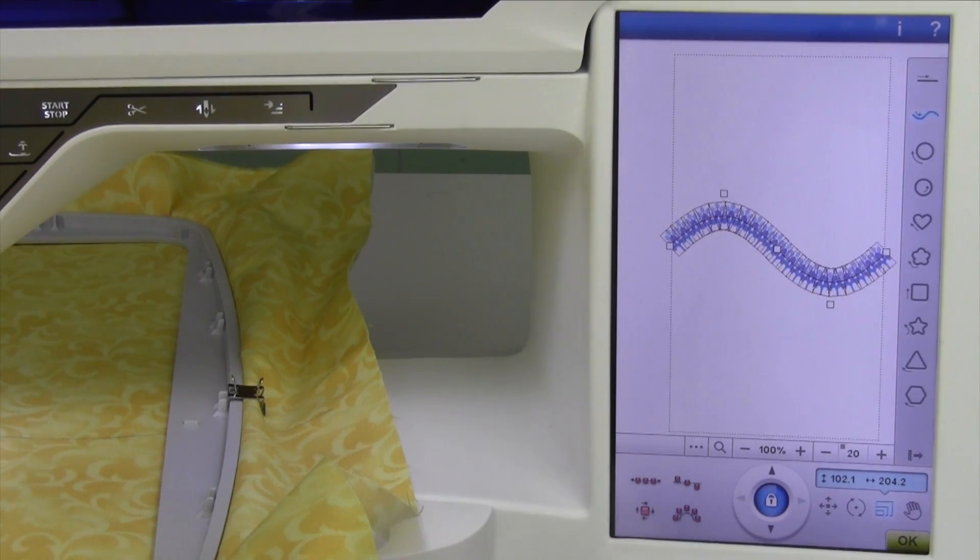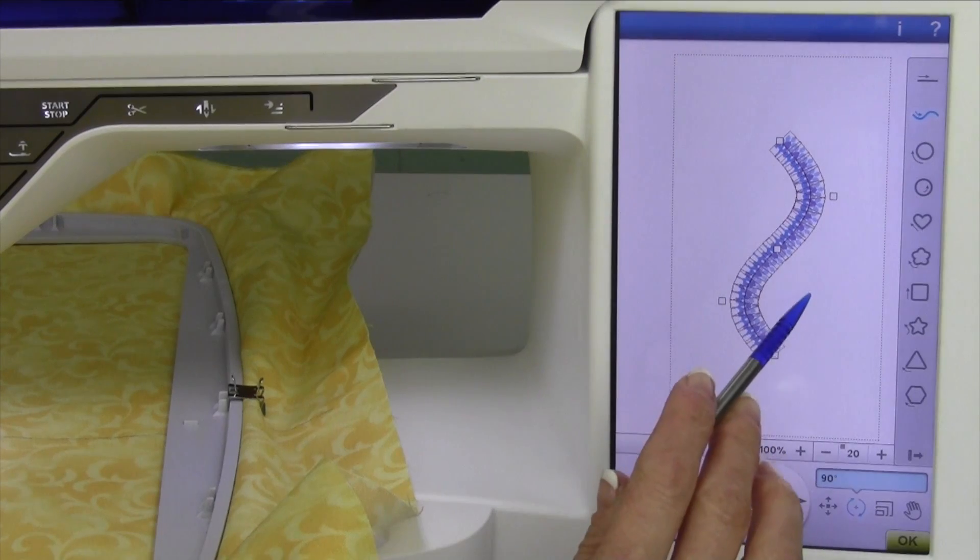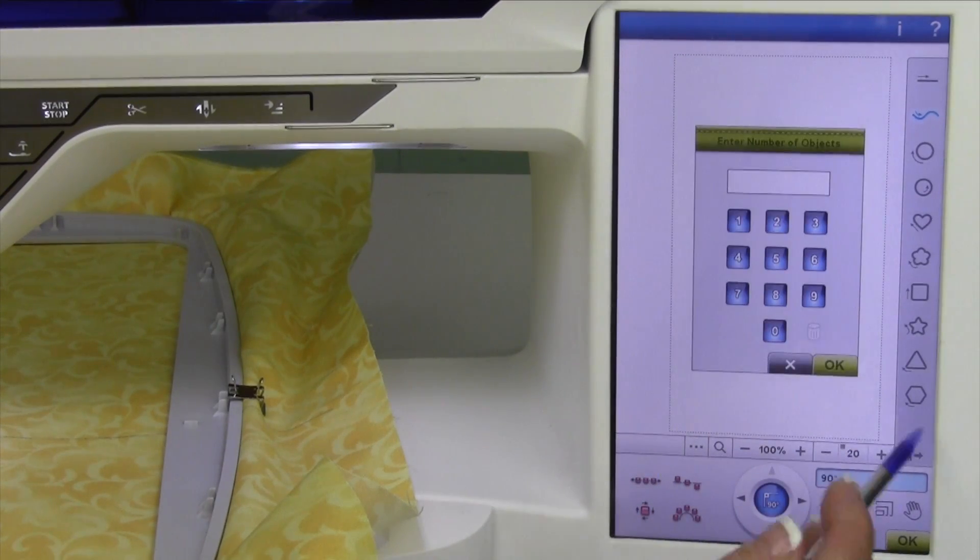Once we have that, we can come over here, and we can rotate that so it could go up and down. Okay, that's going to be a lot of stitches. There's a lot of overlap. It's going to be a lot of thick areas, so we probably don't want to have 20 of those designs.